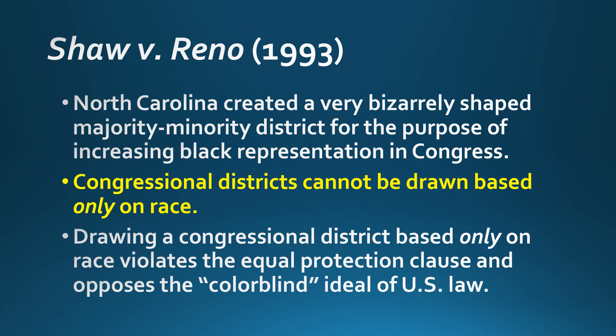Shaw versus Reno involves the drawing of congressional districts. North Carolina created a bizarrely shaped majority-minority district intended to increase Black representation in Congress. The court ruled against this, saying congressional districts cannot be drawn based only on race. Race is allowed to be a factor, but it cannot be the sole reason for drawing a district. Drawing a district based only on race violates the Equal Protection Clause, even if designed to increase minority representation. The court opposed this as contrary to the ideal of a colorblind constitution.